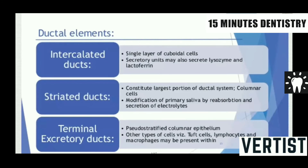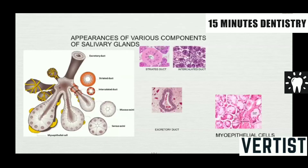Other cells present in the ductal system include tuft cells, lymphocytes, and macrophages. Together, the various components of the salivary gland include the acinar pattern with luminal cells, non-luminal cells, stromal cells, and ductal cells. The non-luminal cells are primarily the myoepithelial cells.